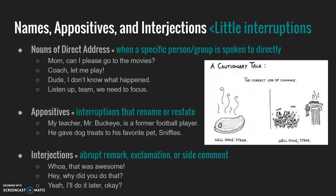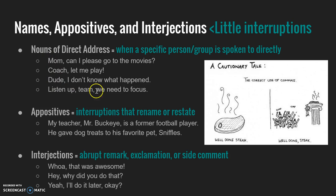Here's where we start stepping into stuff you might or might not know. There's a thing in grammar called nouns of direct address. These happen usually in dialogue when you are talking to a specific person or group directly and want to get their attention. You might say, 'Mom, can I please go to the movies?' — put a comma after Mom. Or: 'Coach, let me play.' 'Dude, I don't know what happened.' 'Listen up, team, we need to focus.' Nouns of direct address are usually at the very beginning of a sentence, but they can happen in the middle or elsewhere too — any time you're saying someone's name directly, put a comma.